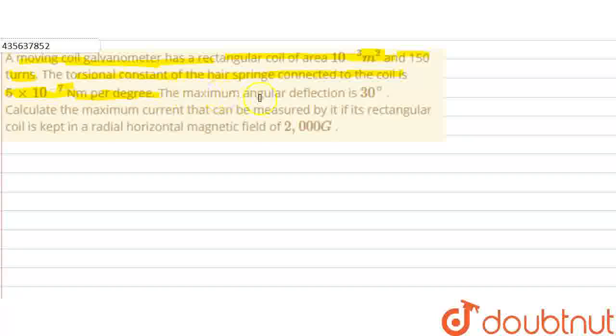In the next part of the question, maximum angular deflection is 30 degrees. Calculate the maximum current that can be measured by it if its rectangular coil is kept in a radial horizontal magnetic field of 2000 gauss.